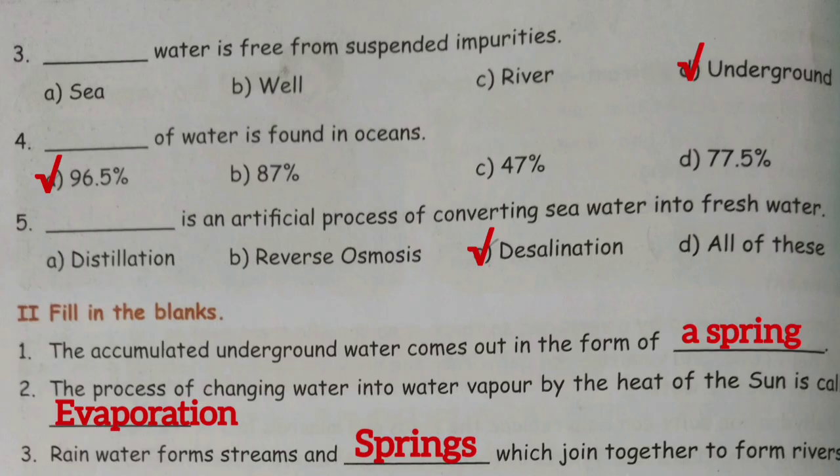Third one: rainwater forms streams and dash which join together to form a river. Answer: springs.